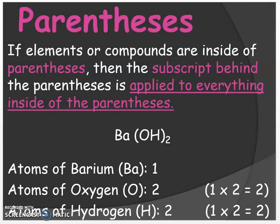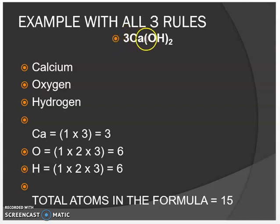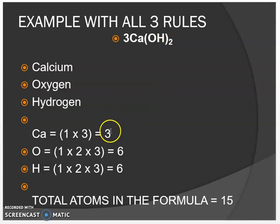Now let's put all three rules together. In this example, we have 3Ca(OH)2. First, list your elements: calcium, oxygen, and hydrogen. There is a coefficient of 3, which gets multiplied by every element. Calcium is not inside the parentheses, so it is simply 1 times 3, giving three calcium atoms. Oxygen is inside the parentheses, so it is 3 times 1 times 2, giving six oxygen atoms. Hydrogen is the same: 3 times 1 times 2, giving six hydrogens. Adding all atoms together, the total number of atoms in this formula is 15.